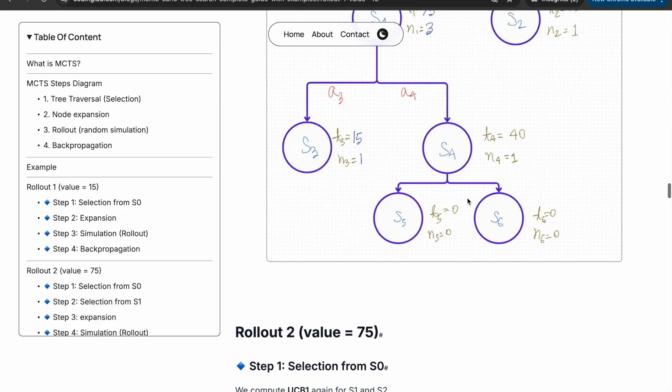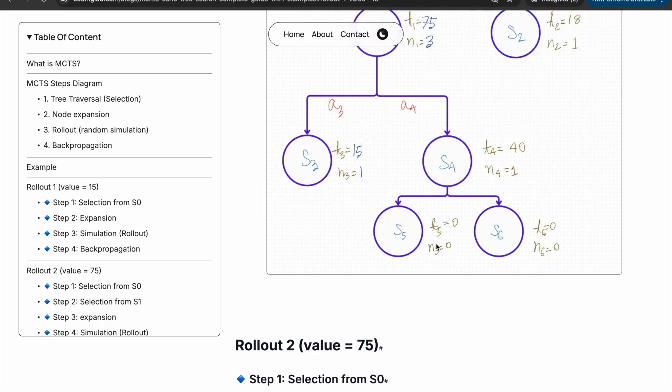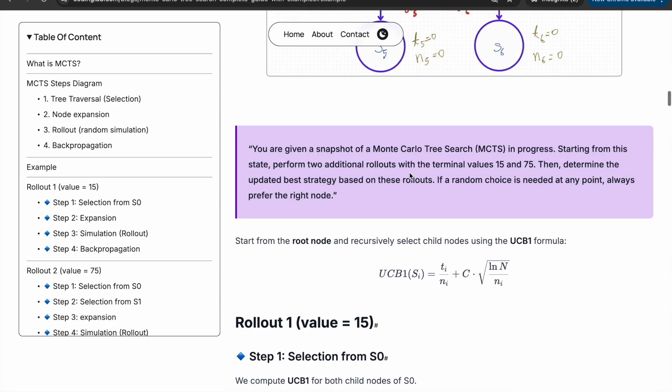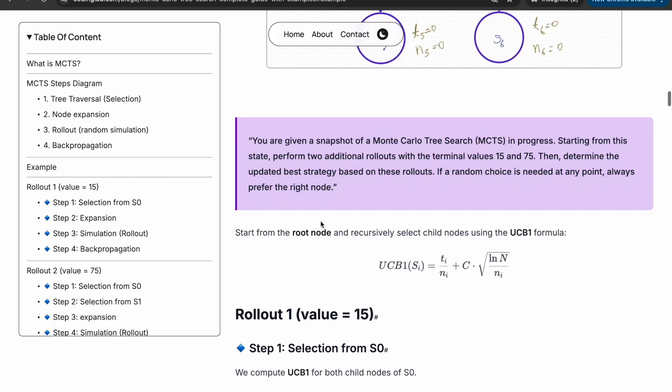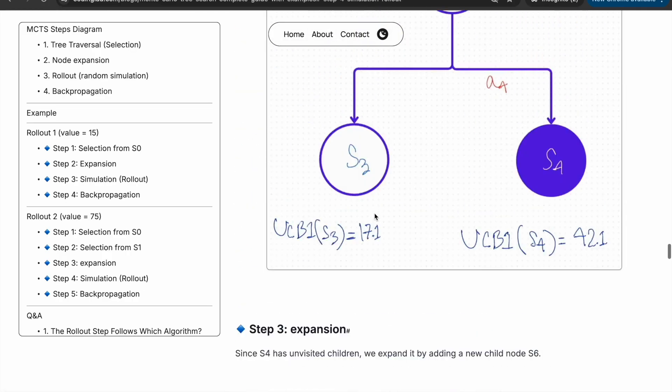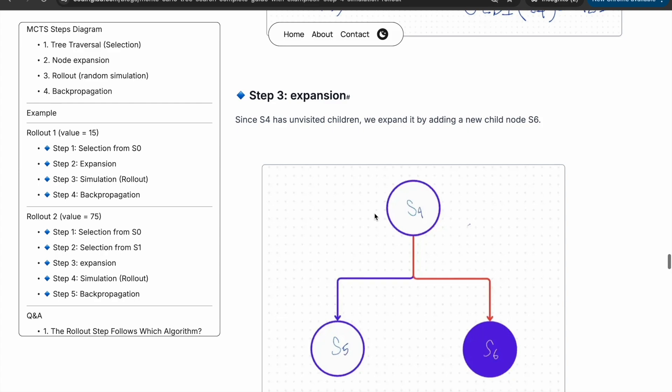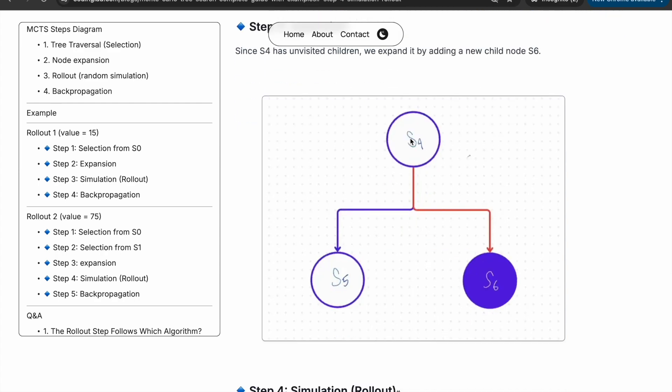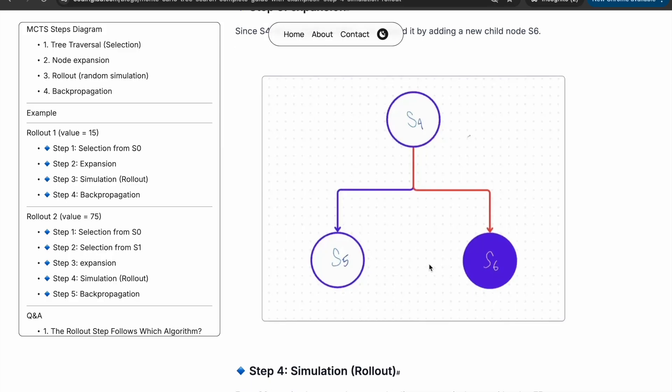Then s4 has unvisited children. Both s5 and s6 haven't been visited yet, so we can choose any of the two. But in the question it said if a random choice is needed at any point, always prefer the right node. That's why we will choose the right one. In the expansion step, we are expanding s4 and choosing s6, the right child of s4.